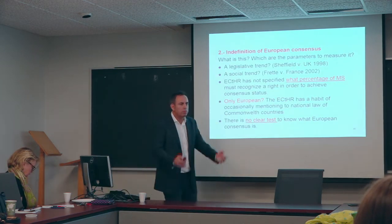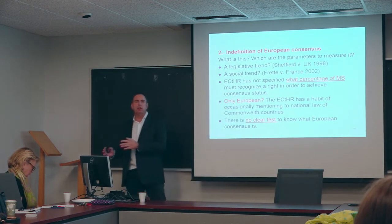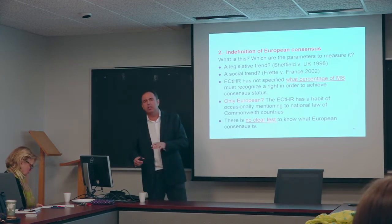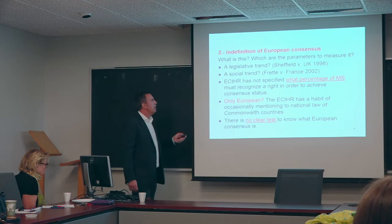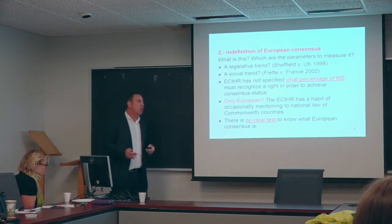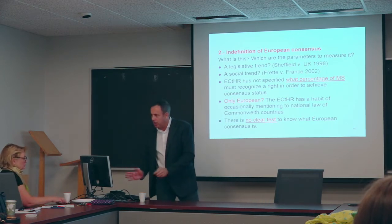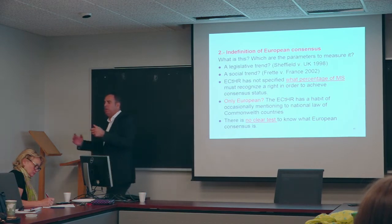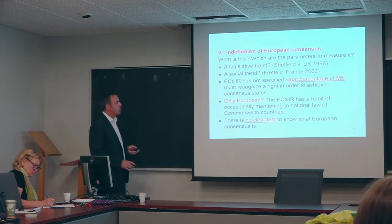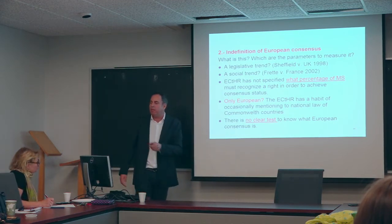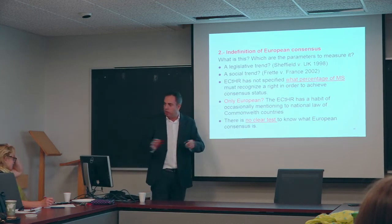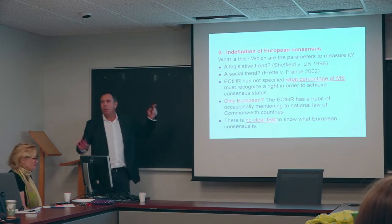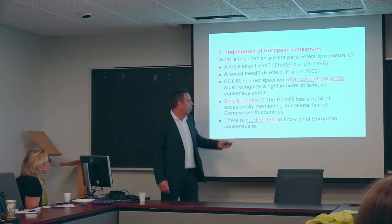Let's assume the case law of the European Court of Human Rights. What is European consensus? In some cases, consensus is a legislative trend. In other cases, consensus is just a social trend. At the same time, we don't know which percentage of member states moving in the same direction is needed in order to talk about European consensus properly. Nobody knows what European consensus is. It's also interesting that it's not only European—the court mentions many times rulings from Canada, Australia, and the United States. This is the so-called Commonwealth approach. There's no clear test to know what European consensus is, and the main consequence is that nobody knows what's going to happen when someone brings their case to the court.